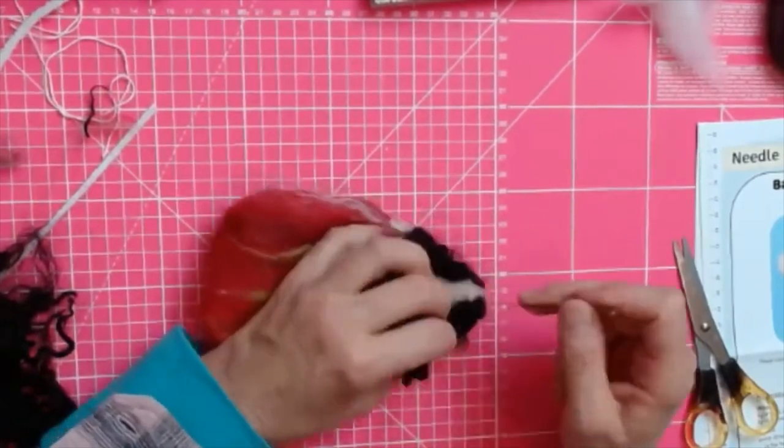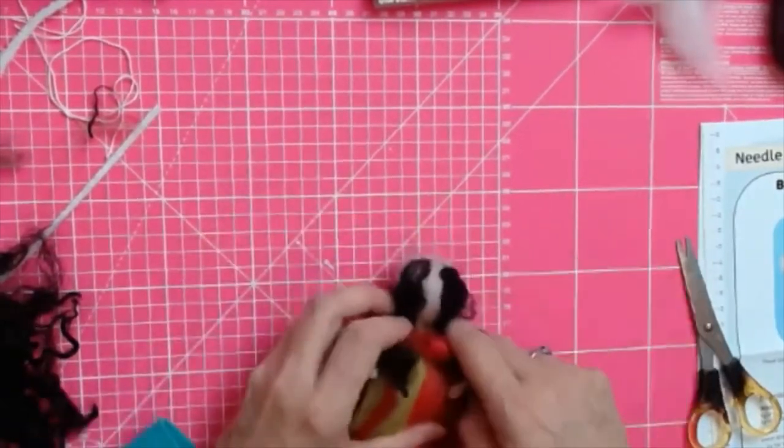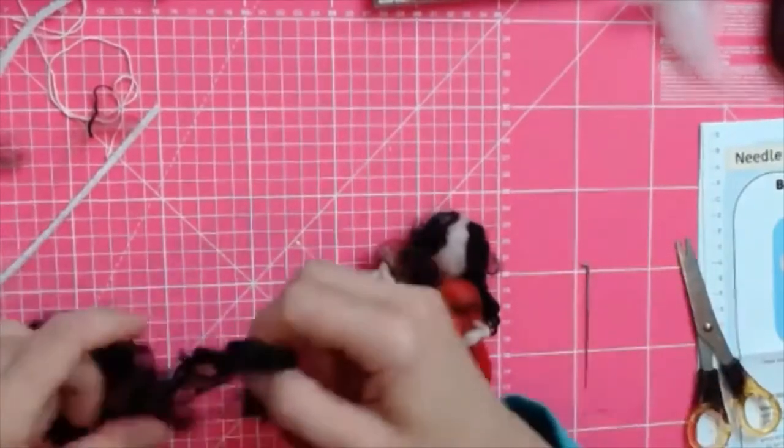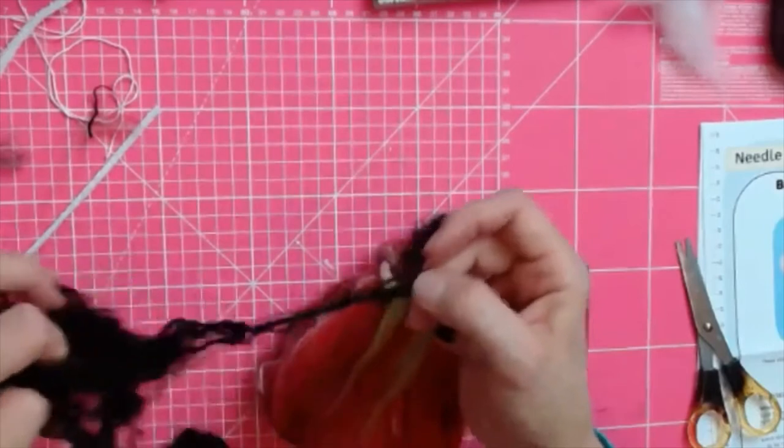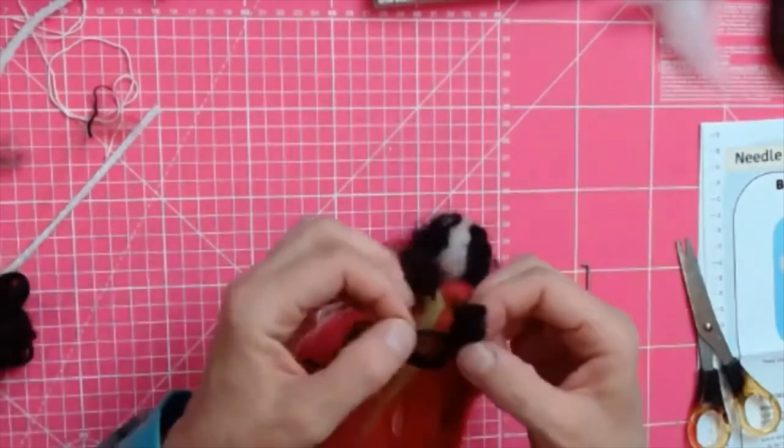On this particular poppy fairy, we're giving her a nice curly fringe, and again you need to pick the right curls for that. You can lay them on to get an idea, and don't be afraid to just cut the bits off you don't want.